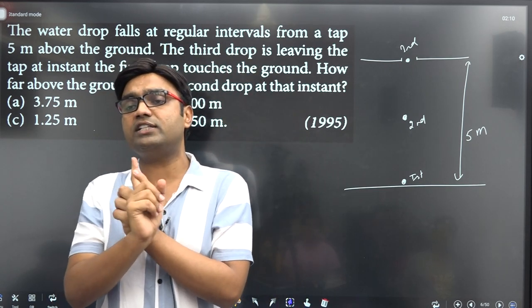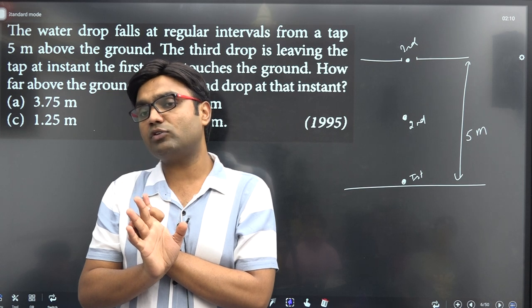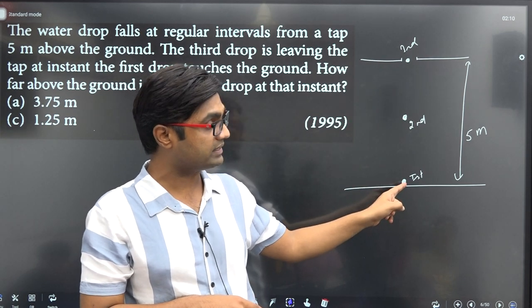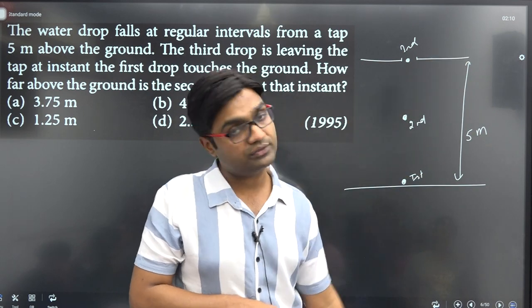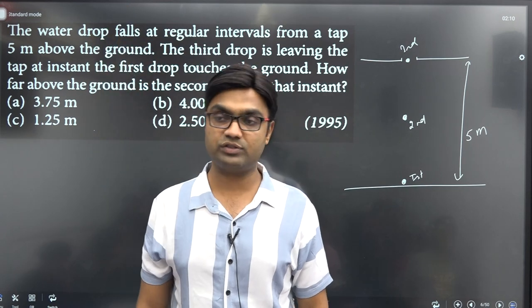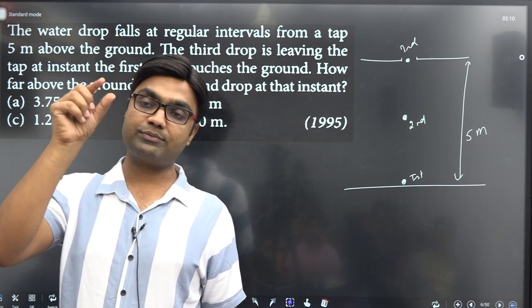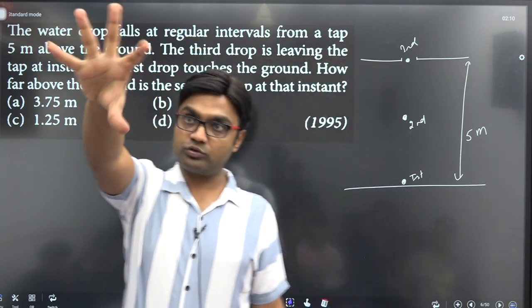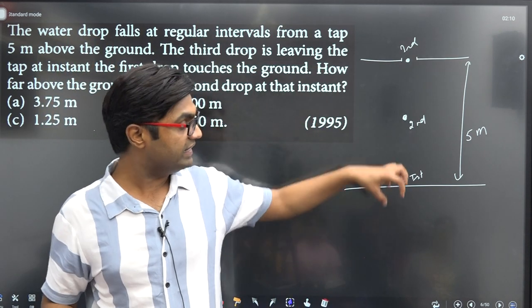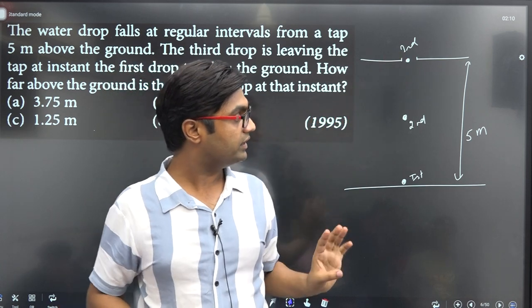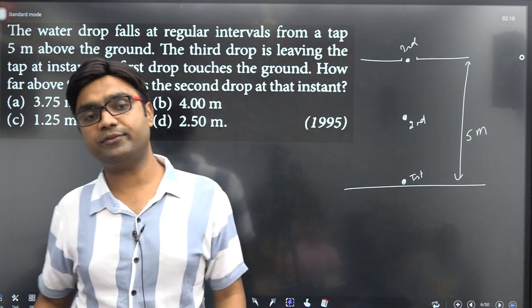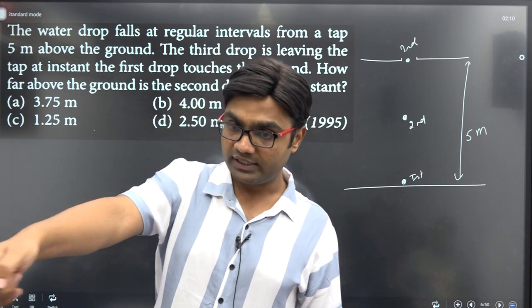Let's say each ball or drop takes time T to fall. The drops are released at regular time intervals. So at what time does the first ball hit the ground? We need to find that time first.